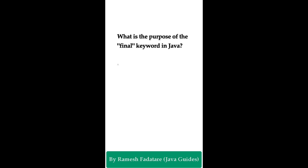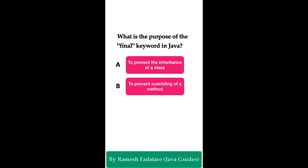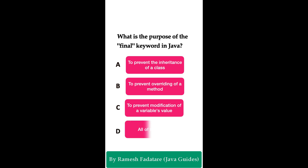Welcome to Java quiz series. Here is one more question: What is the purpose of the final keyword in Java? Option A: to prevent the inheritance of a class. Option B: to prevent overriding of a method. Option C: to prevent modification of a variable's value. Option D: all of the above.